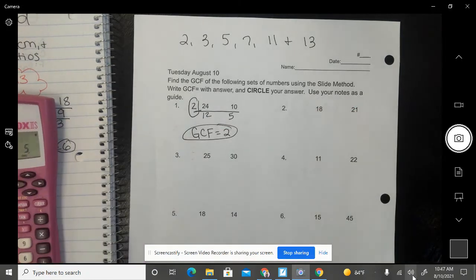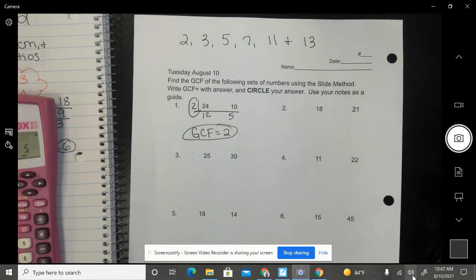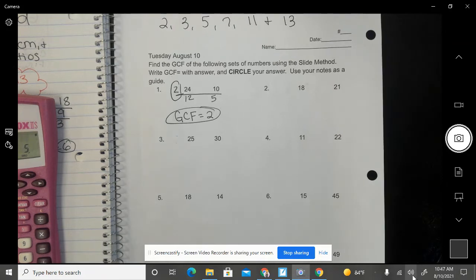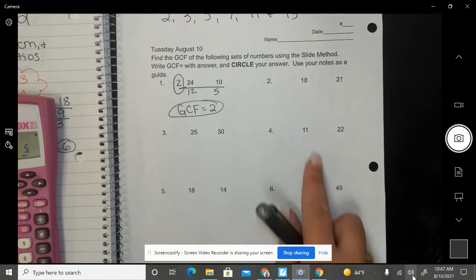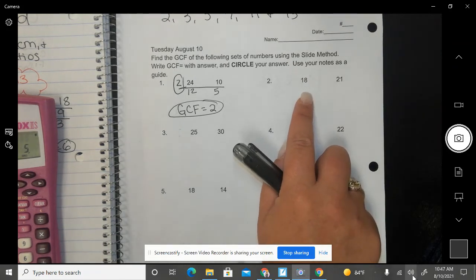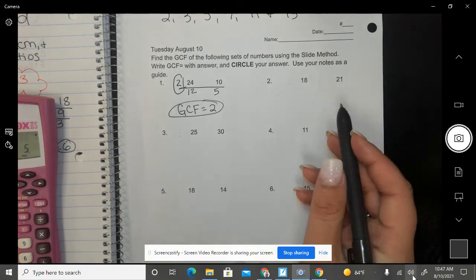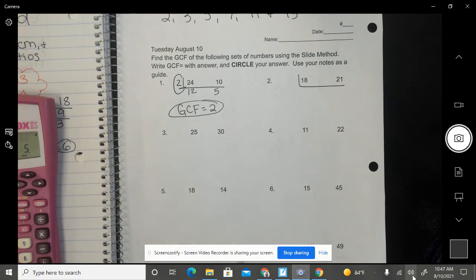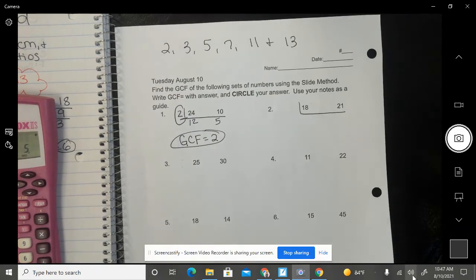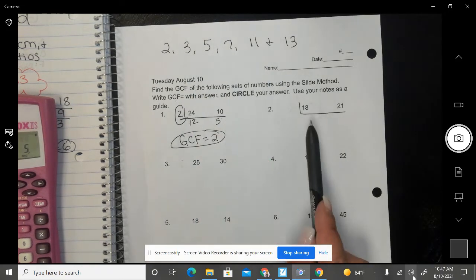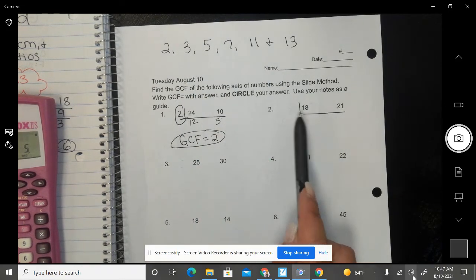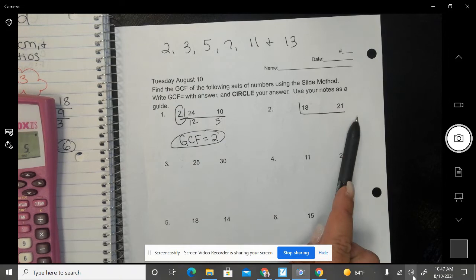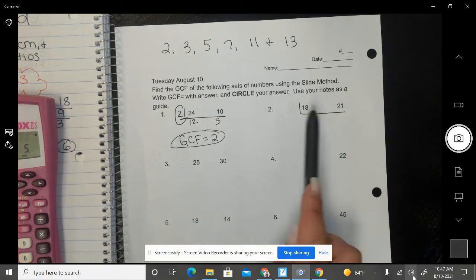I want us to go and come down to, let's try number 2. Okay, we'll go ahead and just try number 2. My first step is to draw the slide, and my second step is to find a common factor. So I'm going to start with 2. Well, both my numbers are not even. 18 is even, but 21 is odd. Because they're not both even, 2 is not going to work. So I'm going to go ahead and jump to 3.